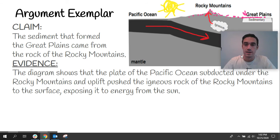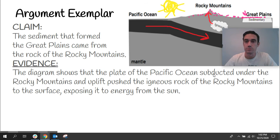Then we had our evidence. And our evidence should be something that we can actually see happening. So the diagram shows that the plate of the Pacific Ocean subducted under the Rocky Mountains and uplift pushed the igneous rock of the Rocky Mountains to the surface, exposing it to energy from the sun. I did not say the word 'because' at all in my evidence. I just gave what I see happening in the diagram. All of these things I described, I can actually point to in the diagram that I've drawn out here.